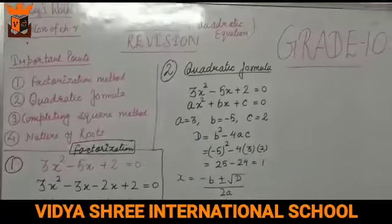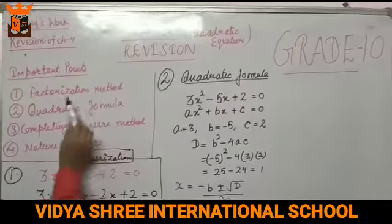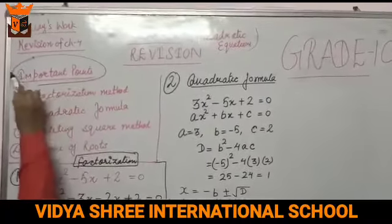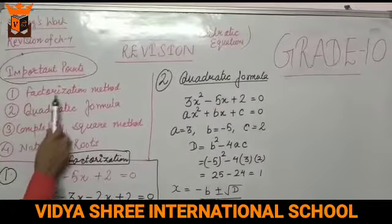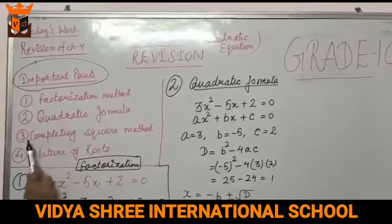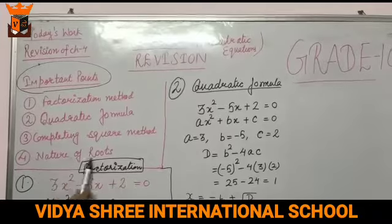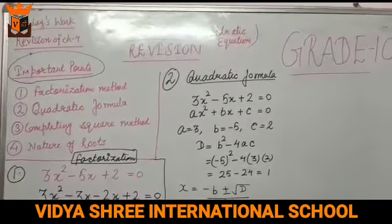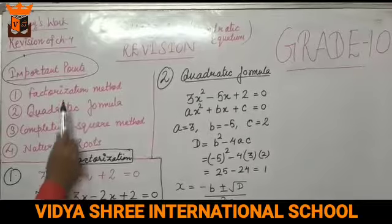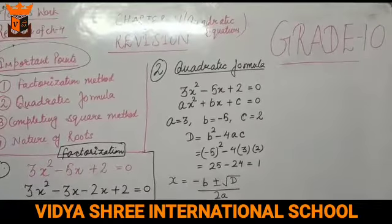This is chapter number 4 — quadratic equations. We are going to revise this chapter. Today we will discuss these important points of chapter number 4: the first one is factorization method, the second is quadratic formula, the third is completing square method, and the fourth is nature of roots. We have 4 exercises in chapter number 4 and these 4 topics are connected to those 4 exercises.